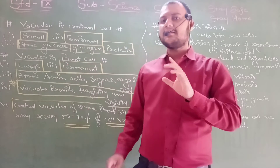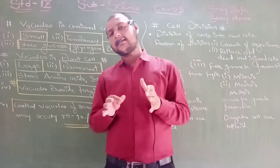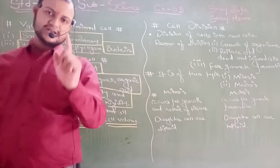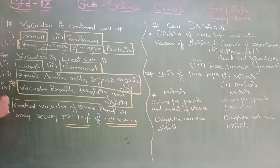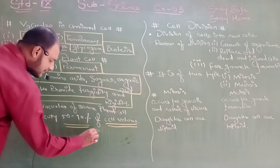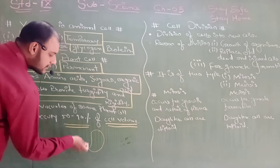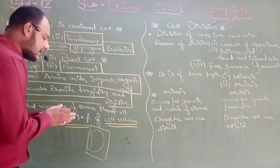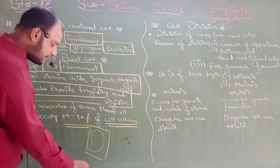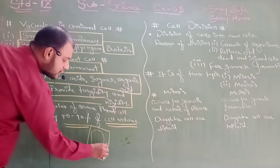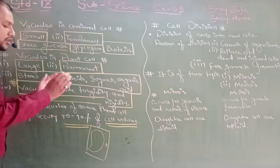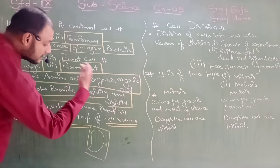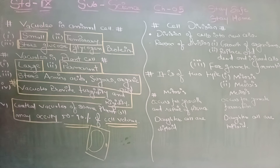You may recall that the largest organelle in a cell is the nucleus — yes, but in a mature plant cell, vacuoles can cover up to 90 percent of the volume, pushing the nucleus to the side. So in plant cells, the nucleus is found somewhere at the periphery, and the vacuole occupies 50 to 90 percent of the cell volume.